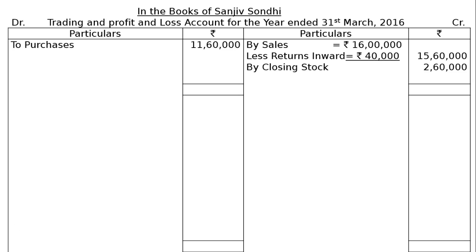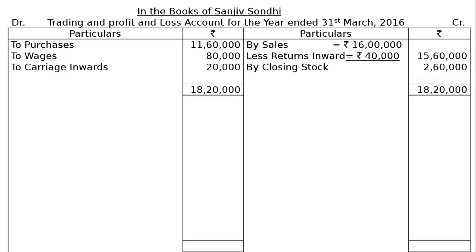On the debit side: To purchases Rs. 11,60,000; to wages Rs. 80,000; to carriage inwards Rs. 20,000. Totalling the credit side comes to Rs. 18,20,000. Writing this in the debit side and finding the difference gives us gross profit carried down.